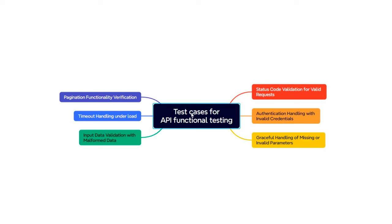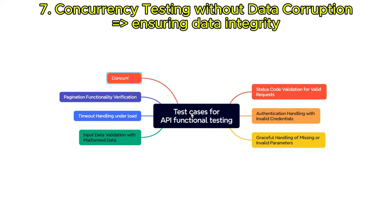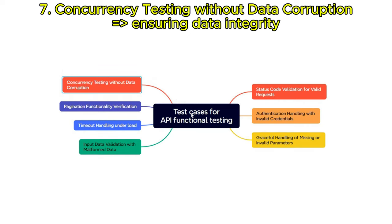Concurrency testing without data corruption: verify that the API handles concurrent requests from multiple users without data corruption or conflicts, ensuring data integrity.